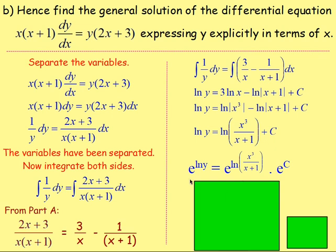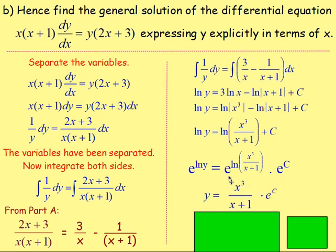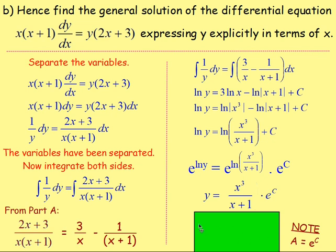e and ln cancel, leaving y equals x cubed over (x plus 1), multiplied by e to the power of c. You know you don't leave it as e to the power of c — you just replace that with a. So y equals a times x cubed over (x plus 1). And that is your answer.